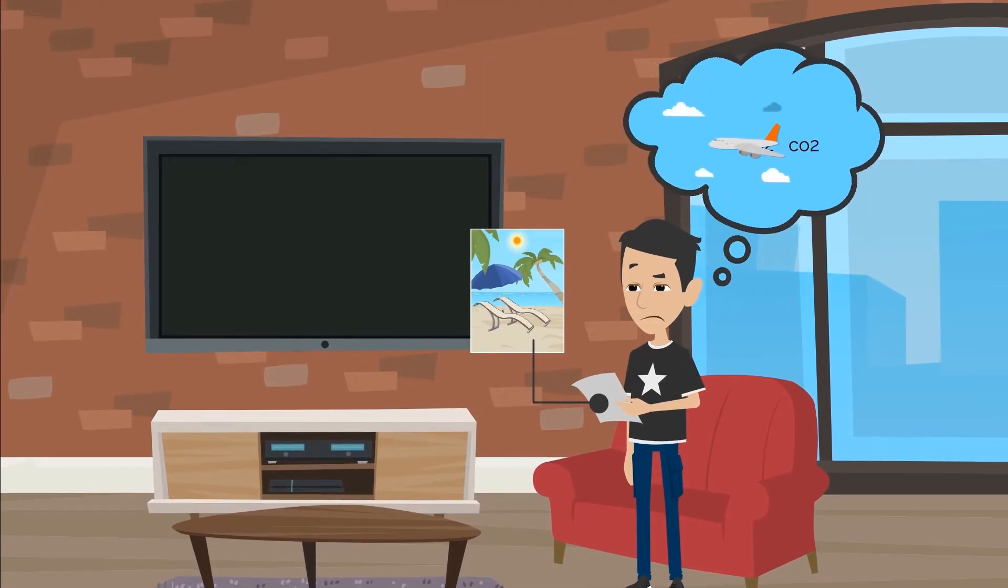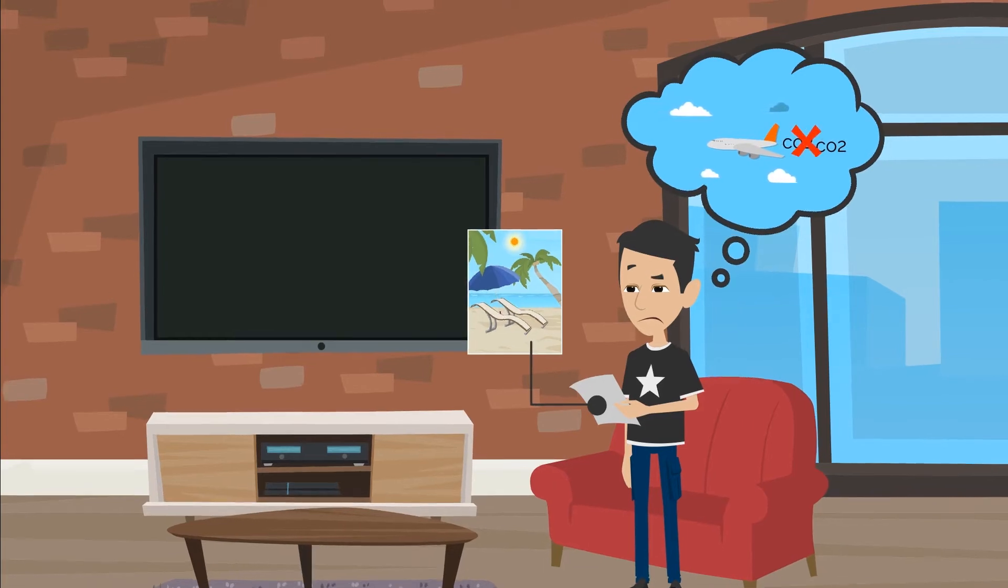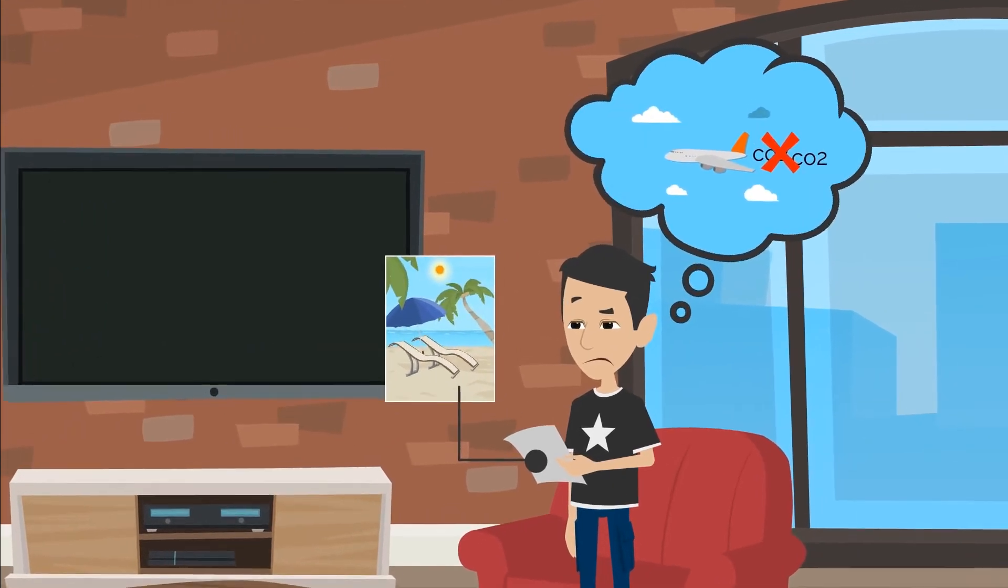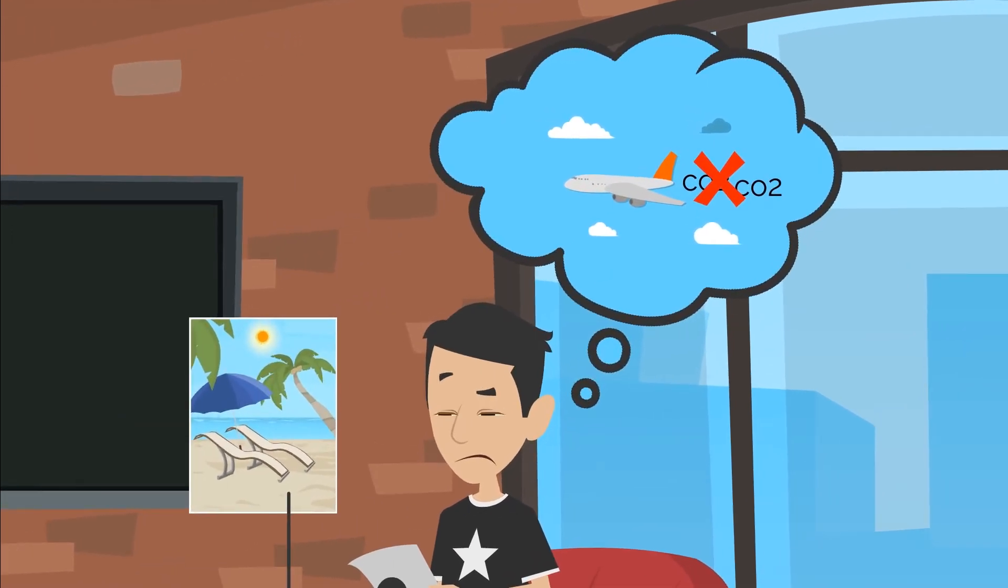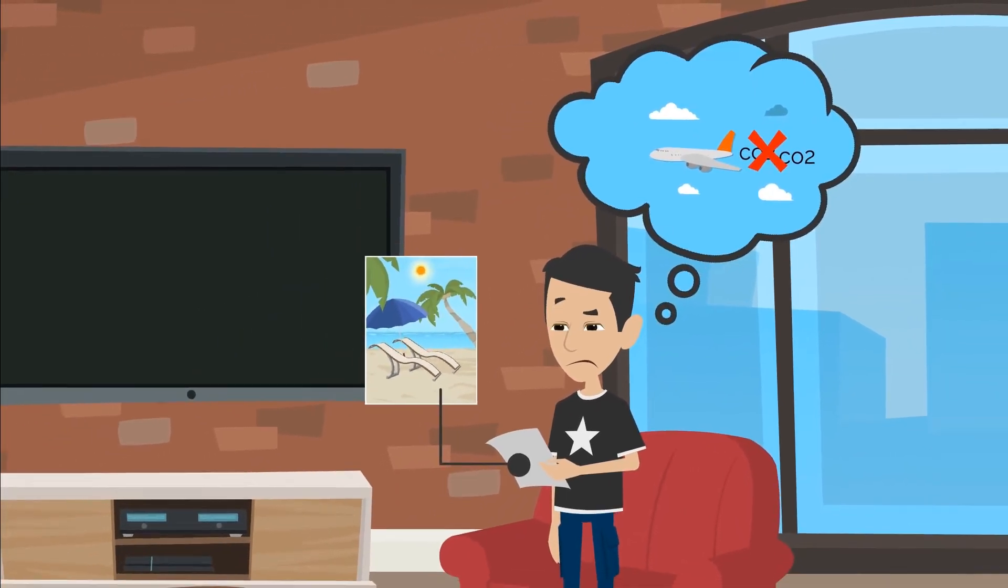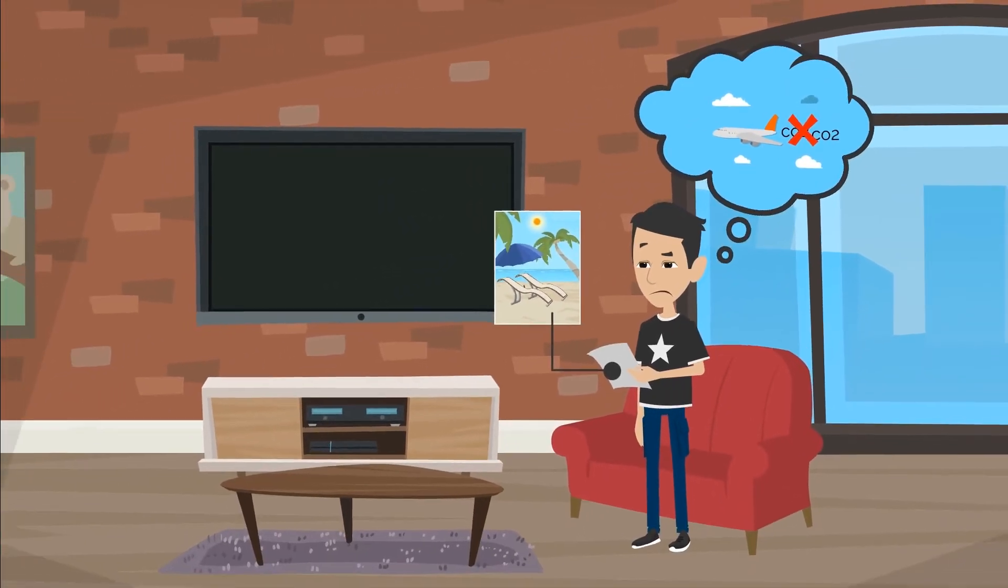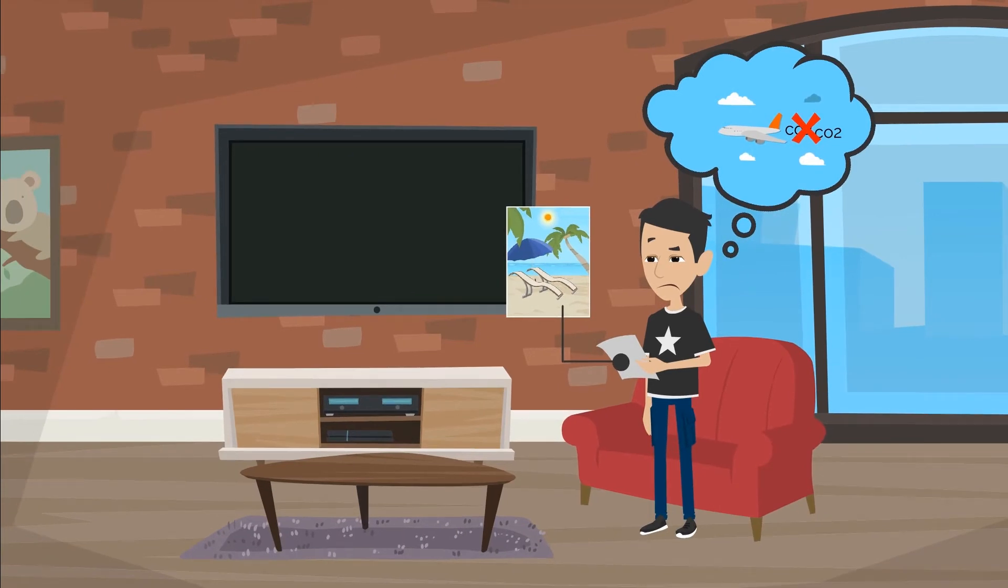When we start to examine our values, we may find conflicting interests. For instance, one may value the well-being of the environment, while they simultaneously value flying to exotic places, causing a large toll on the environment. Sometimes discussions on values tend to fall outside of climate change education, though they are both important and interesting to students.